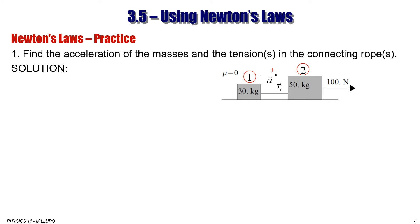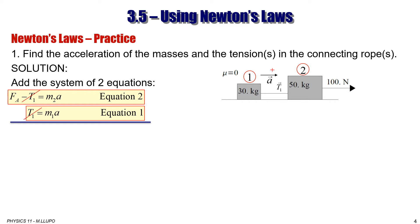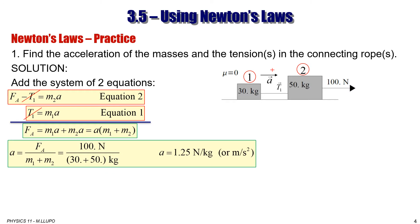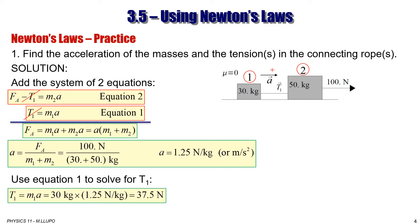Using the same method from sections 3.2 and 3.3, add the two equations together and make sure the tension cancels. What is left is Fa on the left, and M1a plus M2a on the right. Factor out a and solve: acceleration equals 1.25 meters per second squared. Then use equation number 1 to solve for T1: T1 equals M1a, which is 30 kg times 1.25, giving T1 equals 37.5 Newtons.